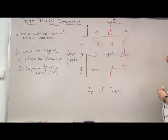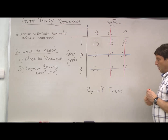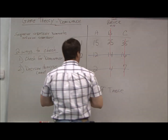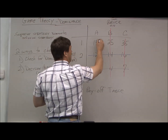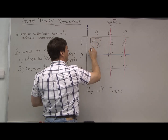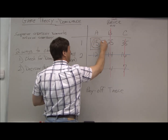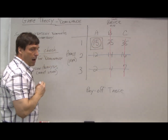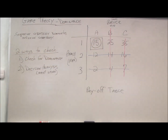By checking for dominance, we can see we have a pure strategy here. No matter how many times we play this game, both Bruce and Andy will always choose A1 — strategy one for Andy, strategy A for Bruce.